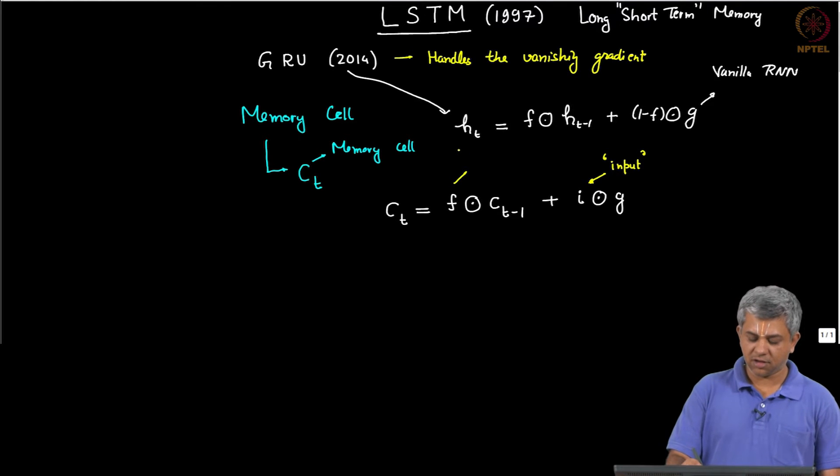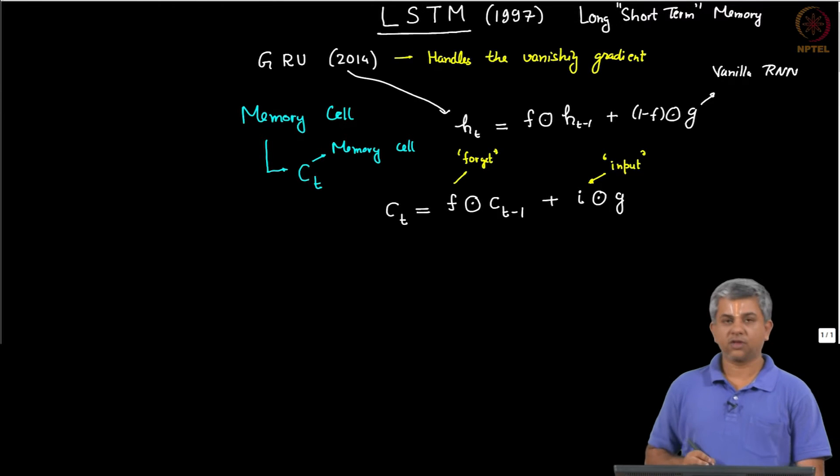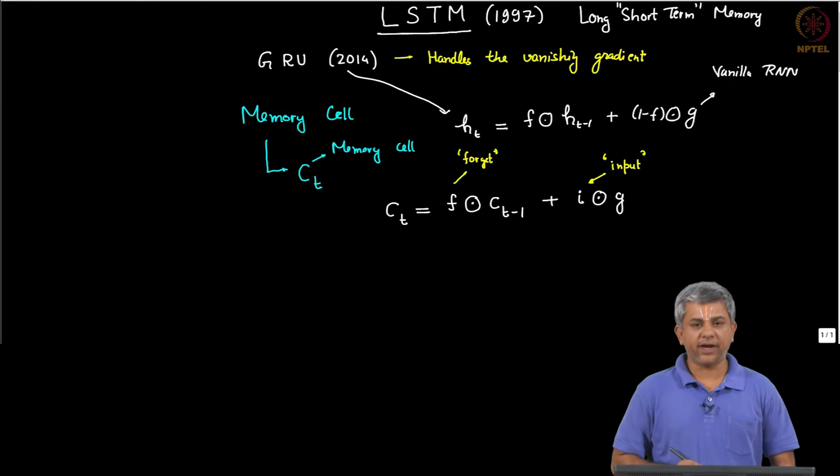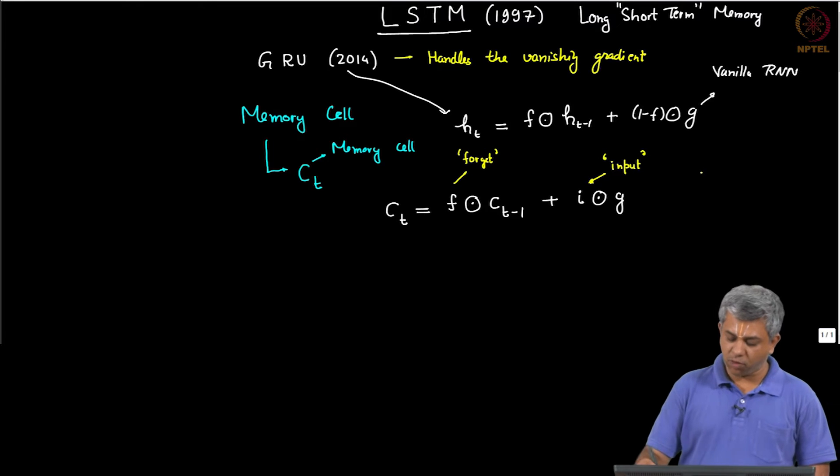F is like last time, it is called the forget gate. So the ideas are very similar. Once again we want F to belong to [0,1], similarly I should also belong to [0,1], but this gives you only C_t.